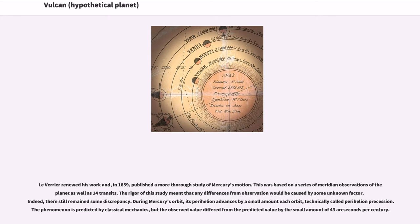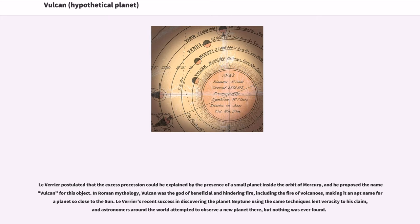During Mercury's orbit, its perihelion advances by a small amount each orbit, technically called perihelion precession. The phenomenon is predicted by classical mechanics, but the observed value differed from the predicted value by the small amount of 43 arcseconds per century.